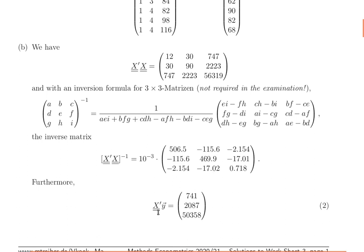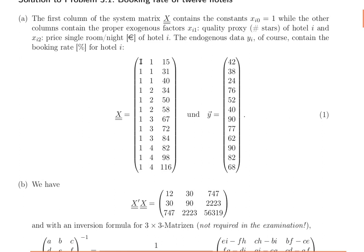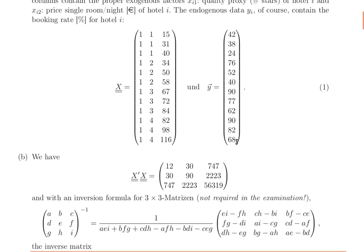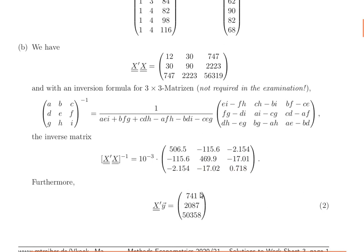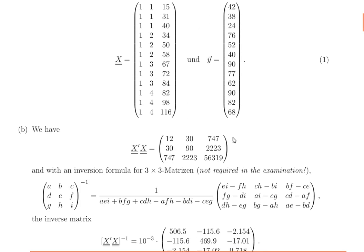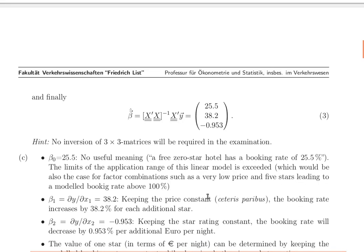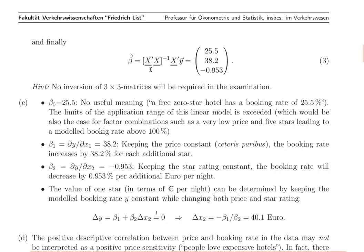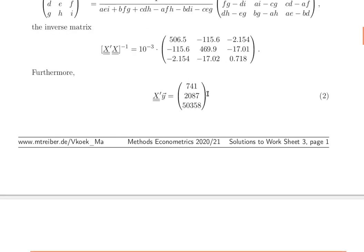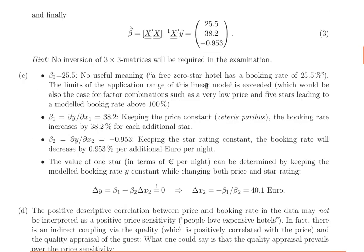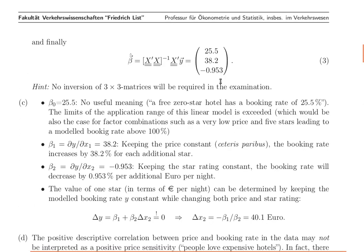We also need X-transpose times the vector of endogenous variables. The first element is the row vector of ones multiplied by y, giving n times the arithmetic average — approximately 741. Then we scalar-multiply the second and third rows of X-transpose with y to get the remaining elements. Multiplying the inverse of X-transpose X by X-transpose y gives the final vector of the ordinary least squares estimator of the parameters.